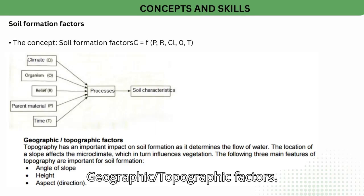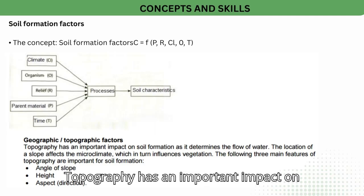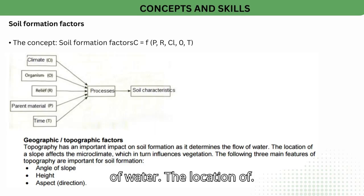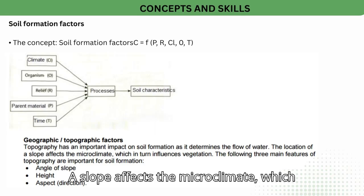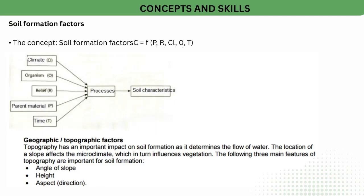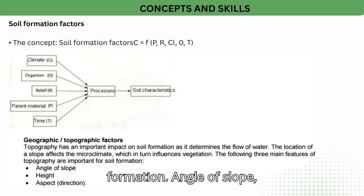Geographic and topographic factors: topography has an important impact on soil formation as it determines the flow of water. The location of a slope affects the microclimate, which in turn influences vegetation. The following three main features of topography are important for soil formation.